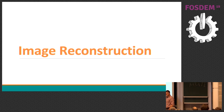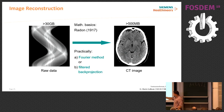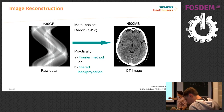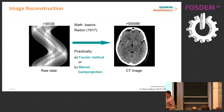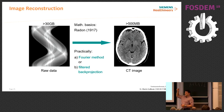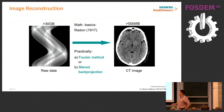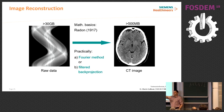Now we come to the Radon inversion formula. From this sinogram we need to reconstruct the image. There are two methods: either Fourier-based, which is normally not used, or image back projection. The process I have shown — taking a projection from one angle, then the next — is simply inverted mathematically. You sit on a pixel and look at the projections contributing to that pixel, and you just reverse the process: mathematical image reconstruction.